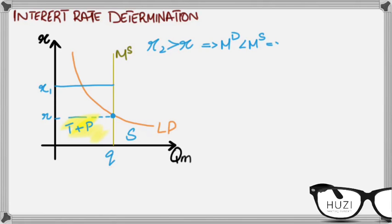They will hold less in the form of speculative demand for money and they'll buy more bonds for greater returns. When that happens, the price for bonds and the interest rates fall and we reach the equilibrium.